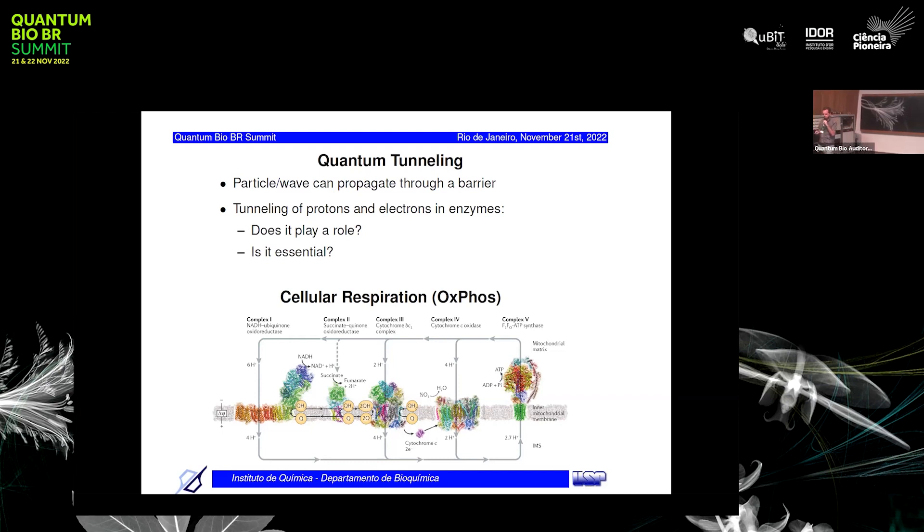Do protons and electrons tunnel in enzymes? Does it play a role? Is it important for the enzymatic catalysis? Is it essential for the enzymatic catalysis? We would like to answer those two questions, in particular for cellular respiration, that's also called oxidative phosphorylation, oxphos. That's this process that I'm showing here that happens in the inner mitochondrial membrane in the mitochondria in our cells.